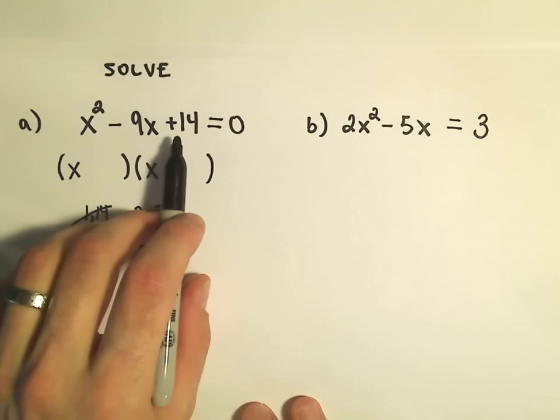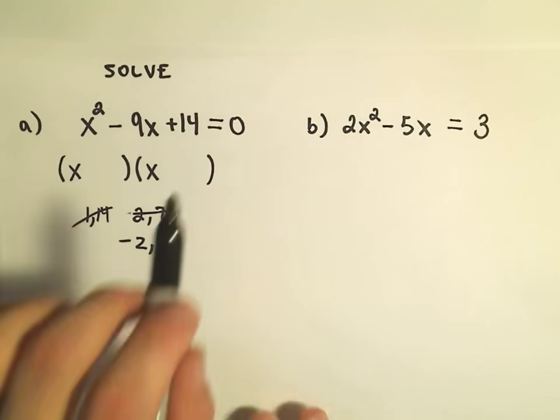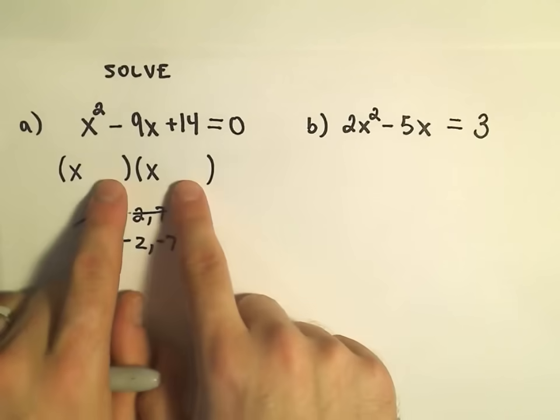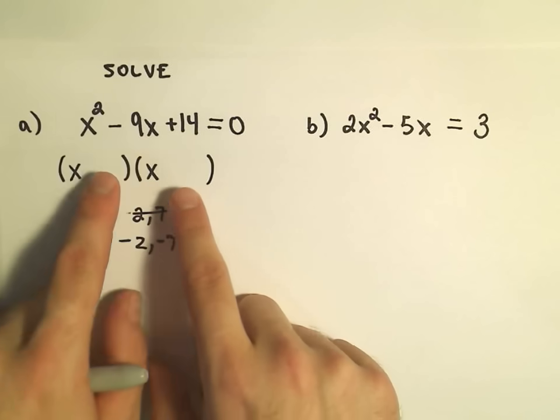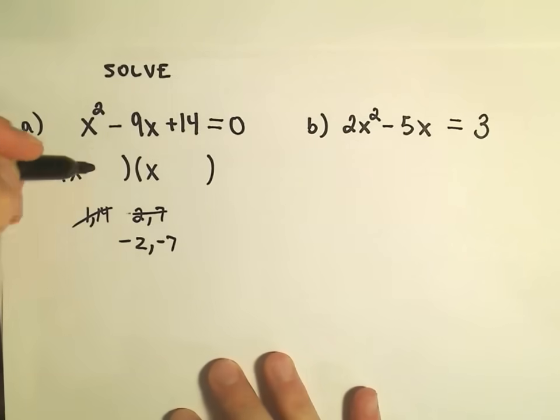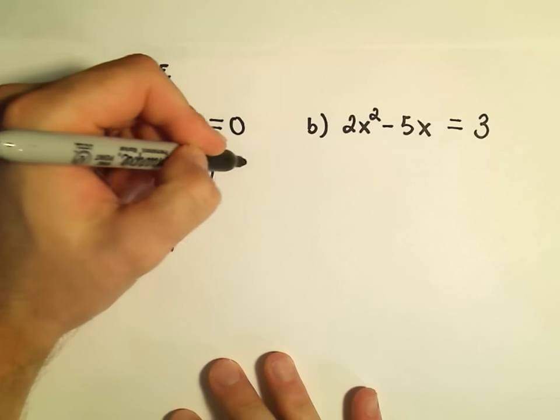The way I think about it, if the whole number, if the number is positive, they either have to be both positive or both negative. Whatever the sign on the middle is, if it's negative, that's what they'll both have to be. So we use negative 2 and negative 7 equals 0.